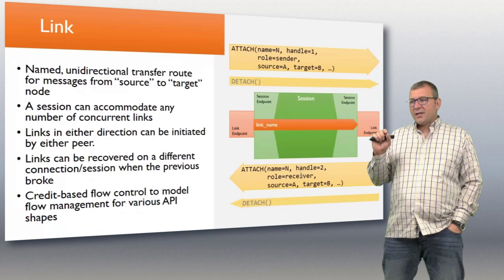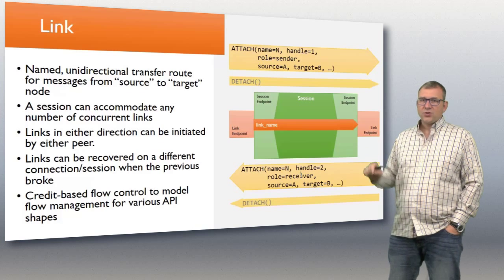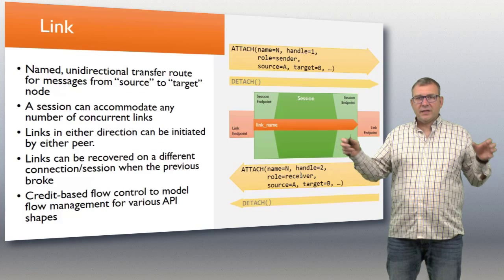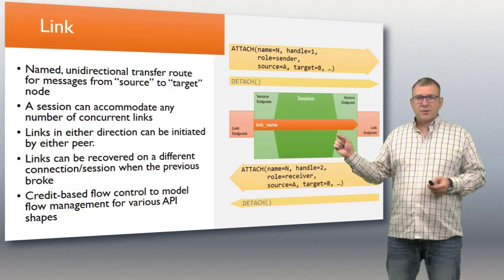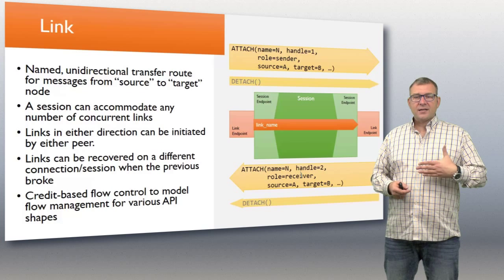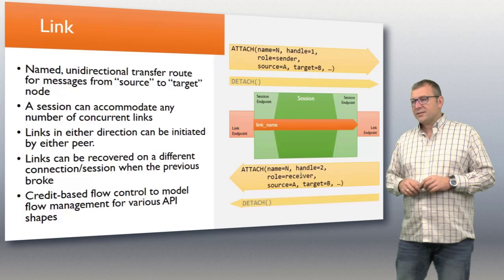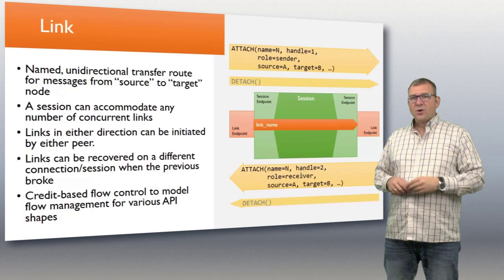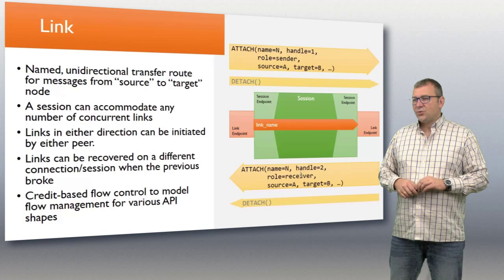The link is a named, the application names it, unidirectional transfer route for messages from source to a target node. A session can accommodate any number of links. They're just illusions effectively created on either side. Links in either direction can be initiated by either peer, so it's fully symmetric. Each party can wish for new links to be created. I can create a link as being a sender, I can create a link as being a receiver, and the other party will then confirm that link by sending the attach. The initiator sends the attach message in one way and then the reply accepting that link is the attach message sent into the other direction.